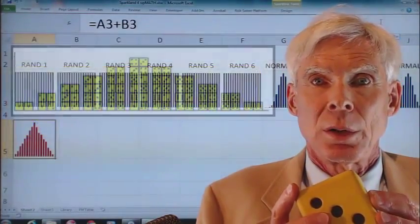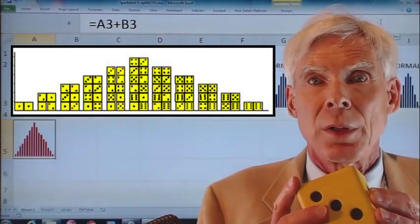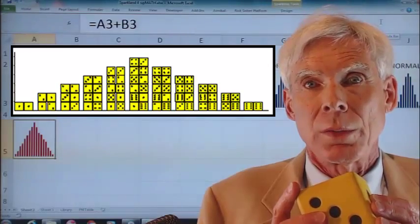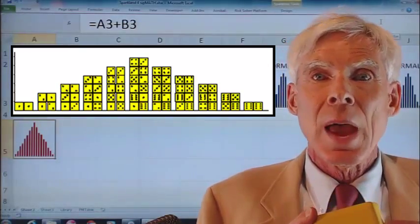But when you add together two dice, there are more ways to get a 7 than either a 2 or a 12. And a similar thing happens with the spinners.